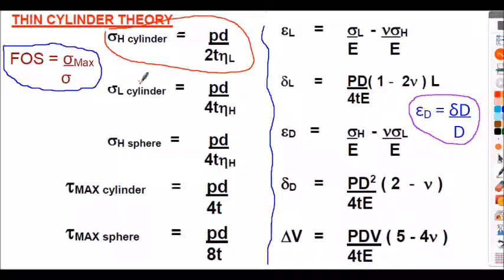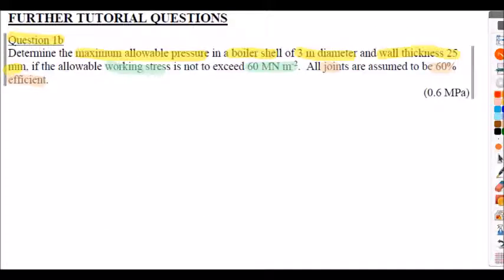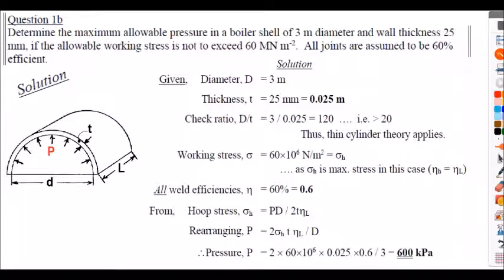The answer is 0.6 MPa internal pressure — that's 6 bar. In the solution I always check the d/t ratio: here it's 120, which is much greater than 20, so thin cylinder theory applies.